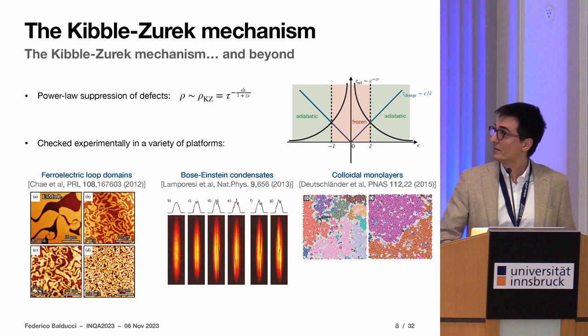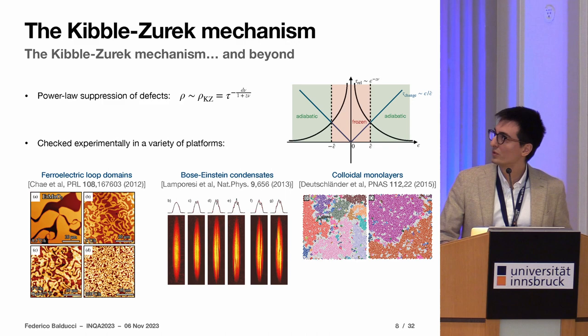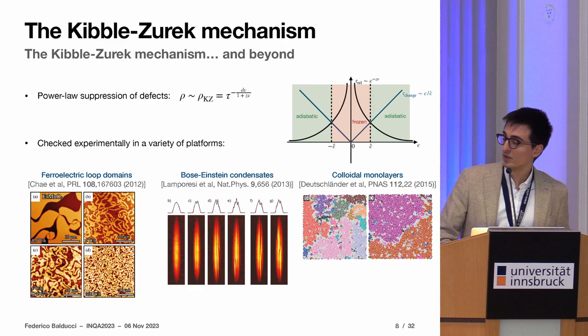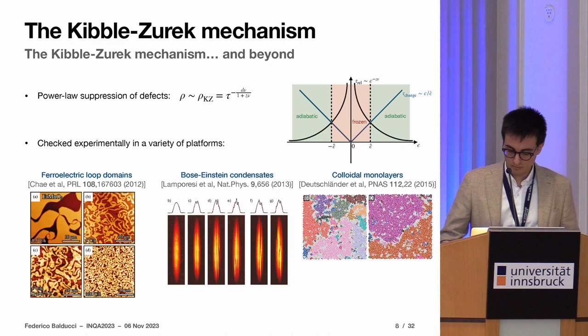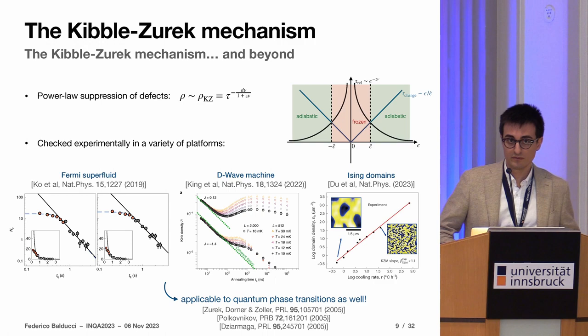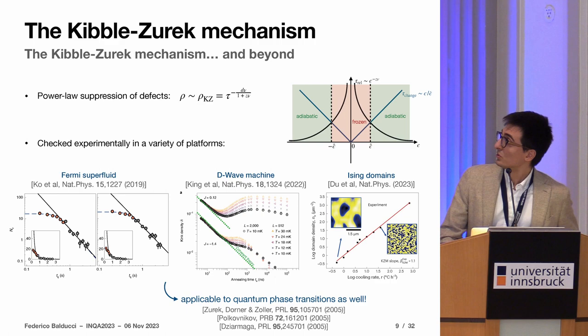What can one see in real experiments is that this formula holds pretty well. One takes snapshots of systems that have been cooled slowly or fastly and there is a great dependence on the number of topological defects. You can also plot this data in log-log scale and find that the number of defects scale with the correct power law. These are the best data so far on a D-Wave machine which show in particular that what I've been talking about applies pretty well to quantum phase transitions as well.